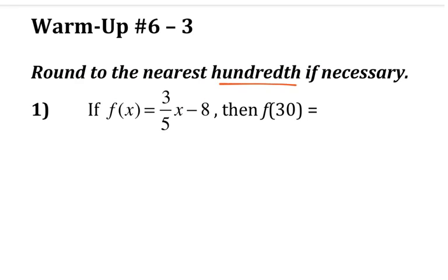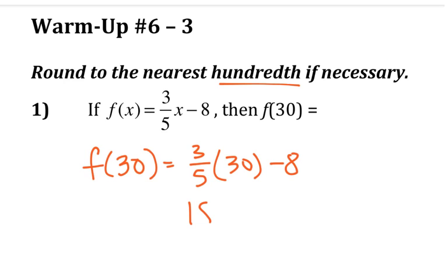Number 1, round to the nearest hundredth if necessary. If f(x) equals 3/5x minus 8, find f(30). So we are going to find f(30) by substituting 30 in for x. So 3/5 of 30 is 18 minus 8 equals 10, so that's my answer.